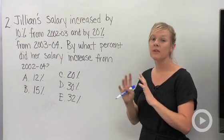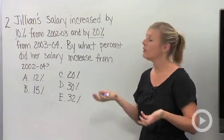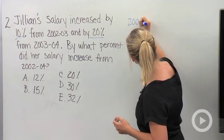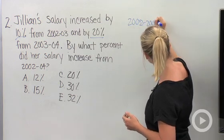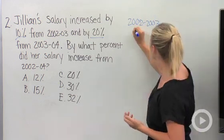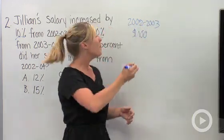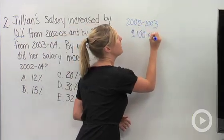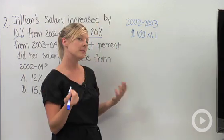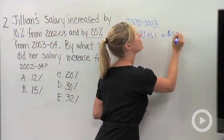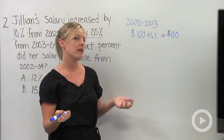What we could do is set up some complicated formulas using 10%, 20%, X, Y, etc. But it's actually a lot easier to choose a number and then start with that and work through what the percent increases are. When working with percents, it's really easy just to choose the number 100. So let's say that from 2002 to 2003, Jillian's salary started at $100, which is a pretty low salary, but then it increased by 10%, which means you would multiply times 1.1, which means at the end of 2003, her salary would actually be $110.